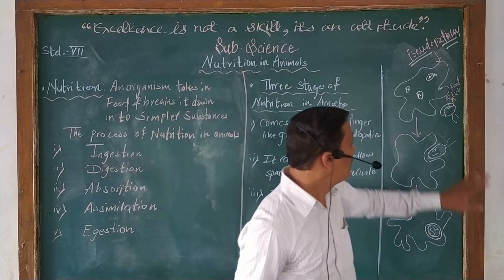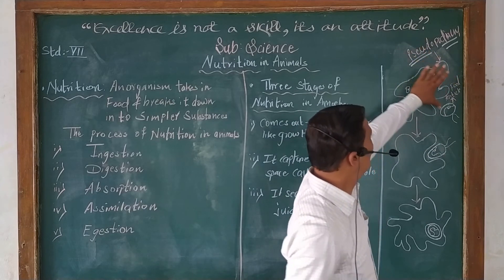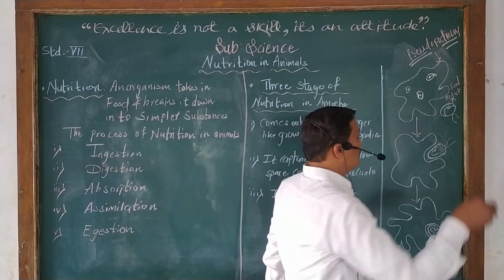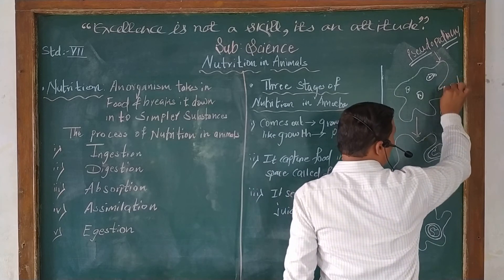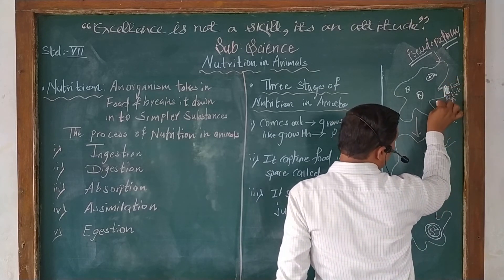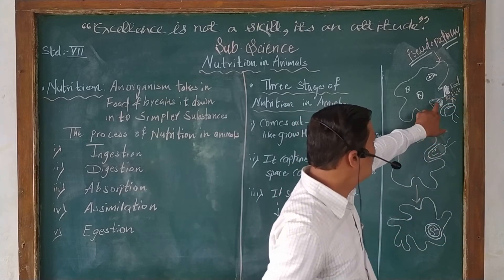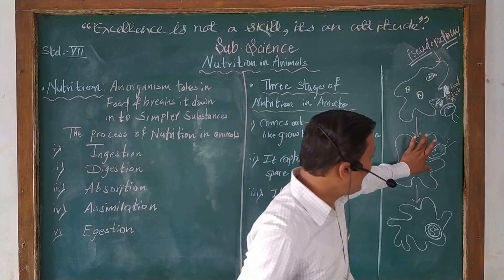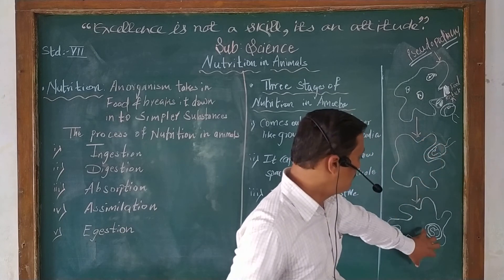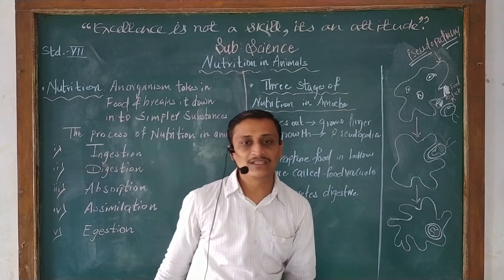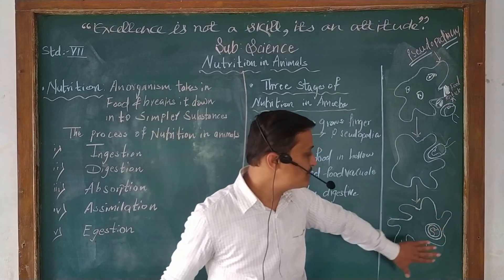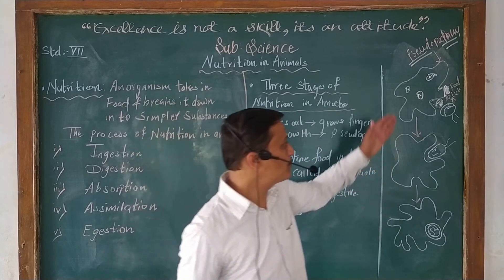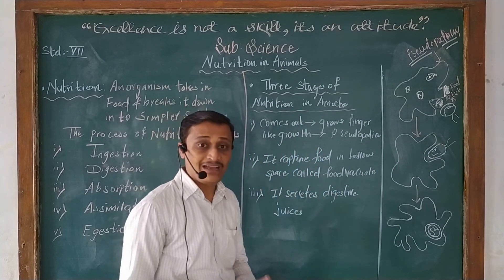As I mentioned, amoeba has pseudopodia — false feet — which capture food particles and bring them inside the body. All this shape is of pseudopodium. They capture food in a hollow space called the food vacuole. As shown in the second stage, they capture the food material inside it and absorb all the food material. In the third stage, they digest all the nutrients present in that food molecule and eject the waste outside their body. This is the process by which amoeba digests food and takes nutrition from it.